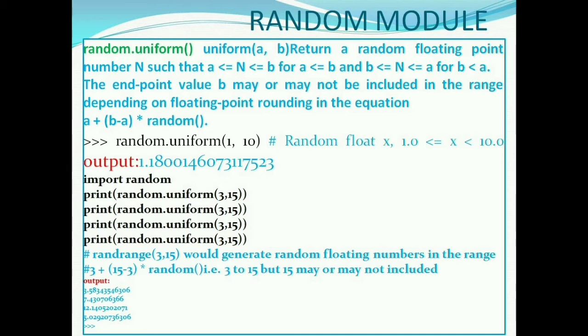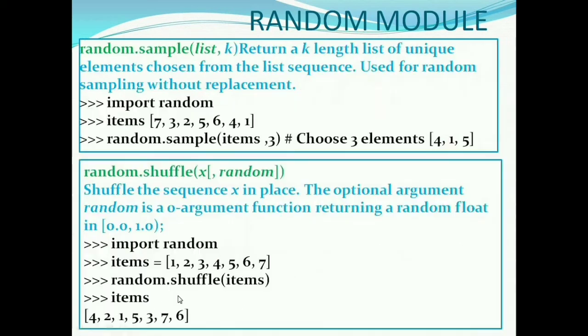random.uniform 3, 15 will generate random floating point numbers. random.uniform 3, 15, and 15 may or may not be included in the range depending on floating point rounding in the equation 3 plus 15 minus 3 into random.